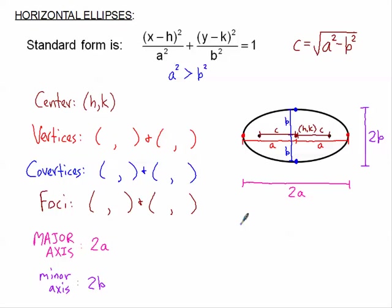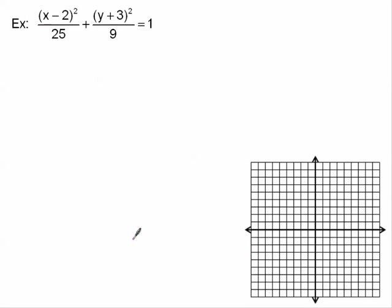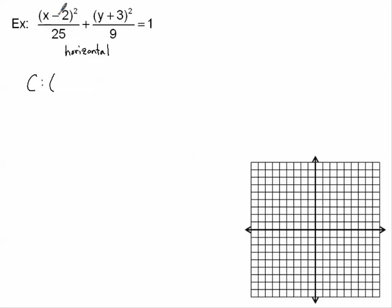Let's graph our first horizontal ellipse. First, confirm it's an ellipse: both terms are squared, there's a plus sign in the middle, and the denominators are different — so it's not a circle. Since the denominator under x is bigger, this is a horizontal ellipse. The center is h equals 2, k equals negative 3, so the center is at (2, −3). The value of a is the square root of 25, so a equals 5.